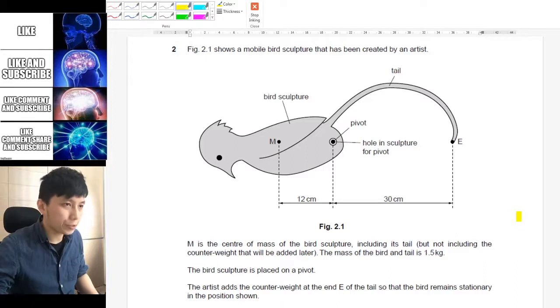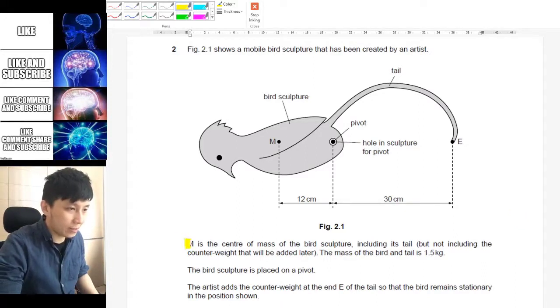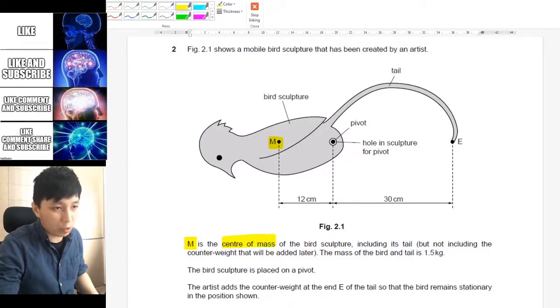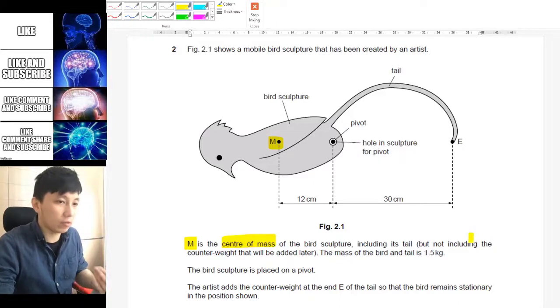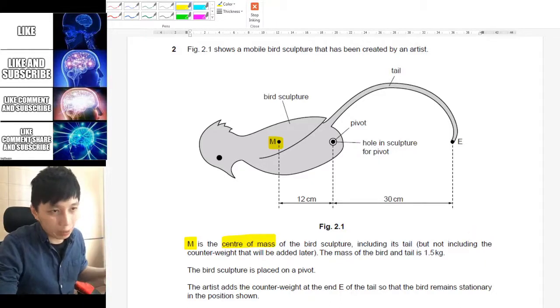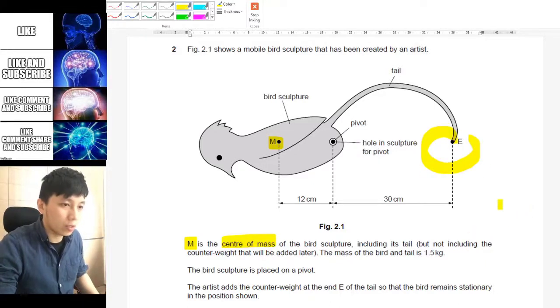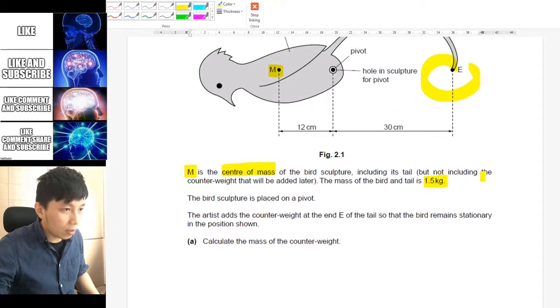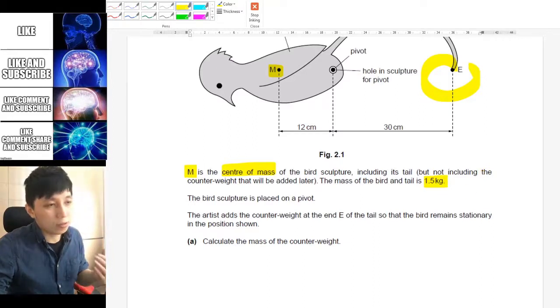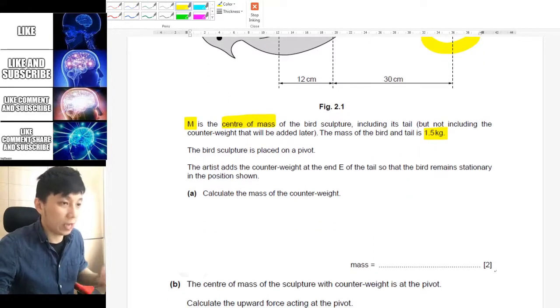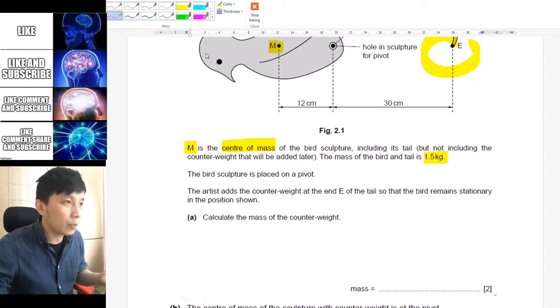So let's have a look at the question. Here is a sculpture of a bird, and it is said that the M here is the center of mass of the sculpture itself, including the tail but not including a counterweight which will be added later on, and then the mass is 1.5 kg.